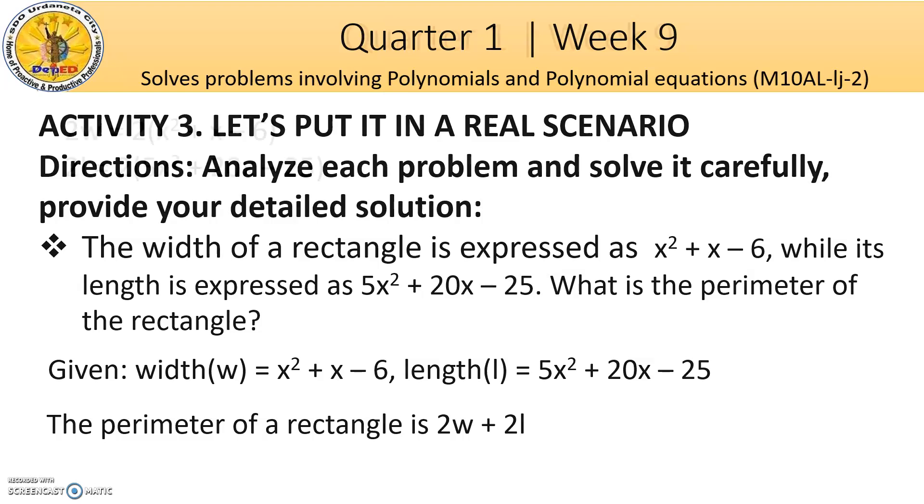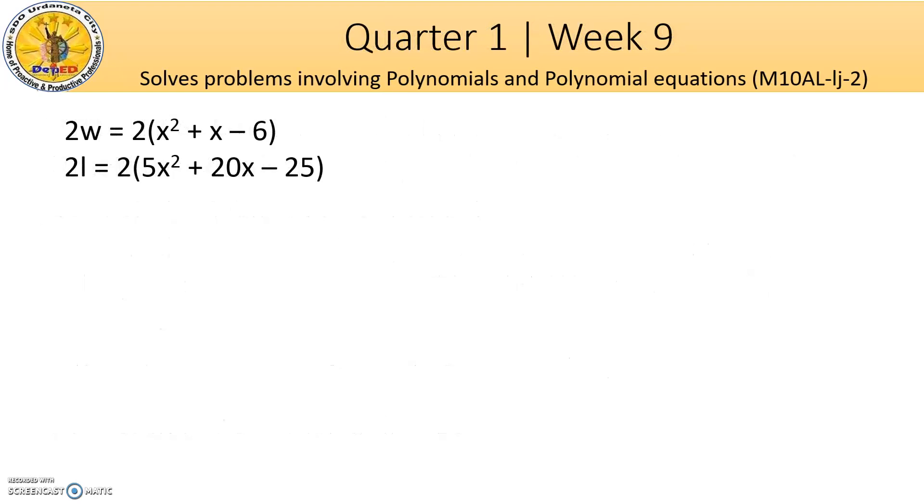We will multiply the width and length by 2. We get twice the width as 2x² + 2x - 12, and twice the length as 10x² + 40x - 50.